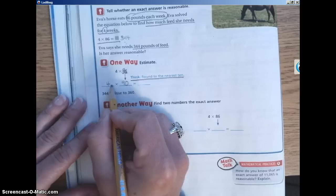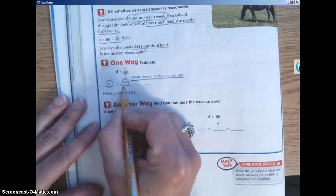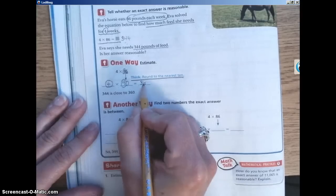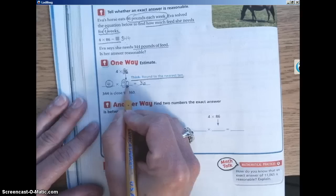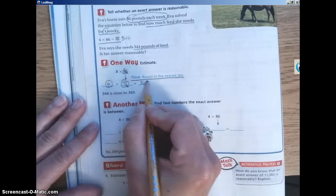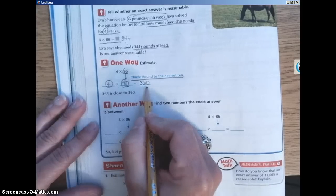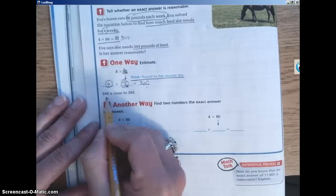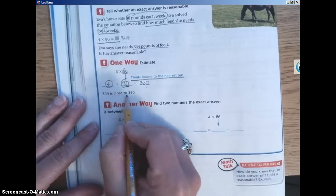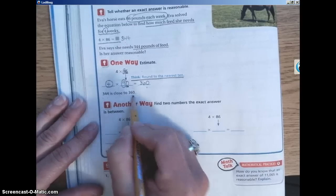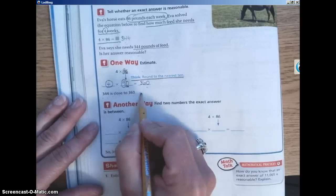Again, mental math. We know that 4 times 9 is 36. And then we add any 0's that were in our original problem, in our original factor. We have one 0. So our estimate is 360. And if we look down here, again, this is written for us. 344 is close to 360. Yes, I would agree. It is close to 360. So that means our estimate is reasonable.